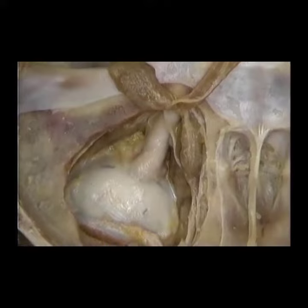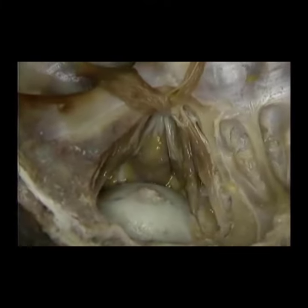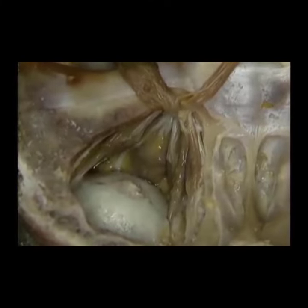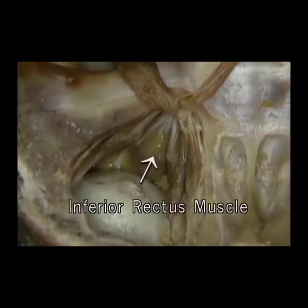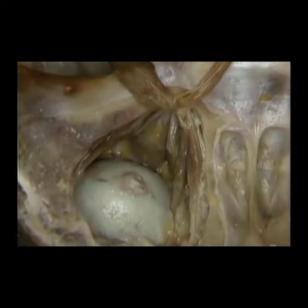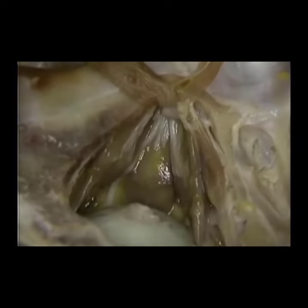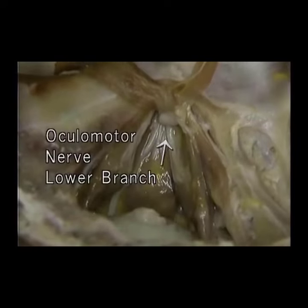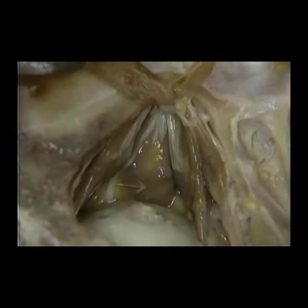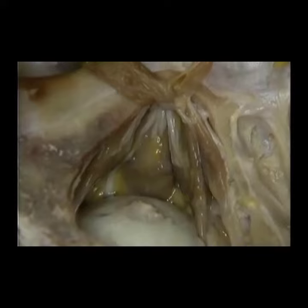To see the lower branch, we'll remove the optic nerve. Here again are the medial and lateral rectus muscles. Down here is the inferior rectus. The only muscle not on view here is the inferior oblique, which is beneath the eyeball. Here's the lower branch of the oculomotor nerve. It supplies the medial rectus, inferior rectus, and the inferior oblique muscles.